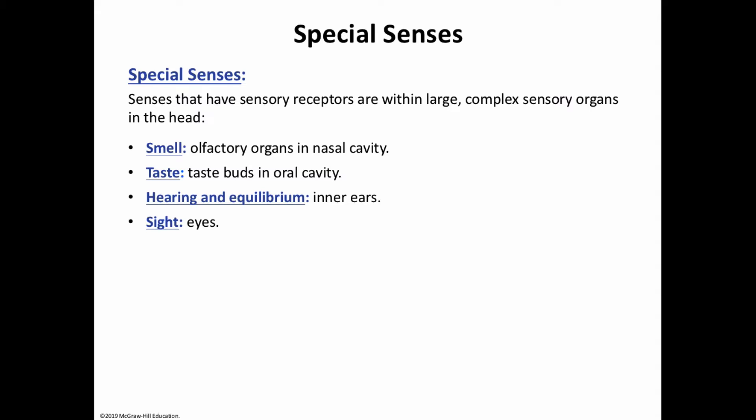These special sense organs are located within the head itself. For smell, we have the olfactory organs and the nasal cavity. For taste, we have taste buds in the oral cavity. Hearing and equilibrium are located in the ear and inner ear, and sight is by way of the eye.